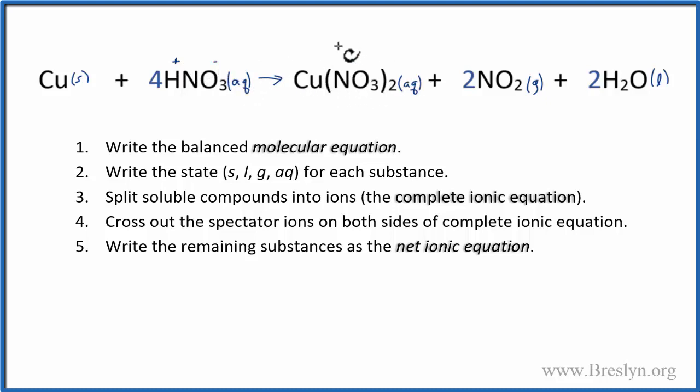And then we have copper, and then a nitrate again, we have two nitrates. Each one has a 1 minus charge, so this has to be 2 plus for them to balance out. So we have our ions up here. Let's split them up, and write the total ionic equation.